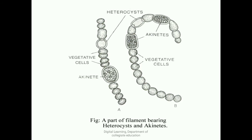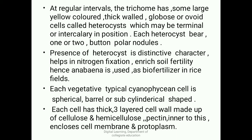A part of the filament bearing heterocysts and akinetes is shown. A single filament consists of a row of cells placed one above the other. There are three types of cells in the filament: vegetative cells, akinetes, and heterocysts. The enlarged single filament is shown in the next slide.